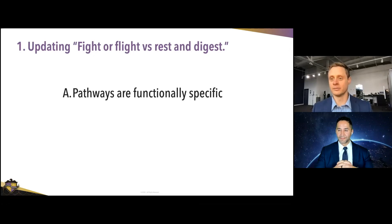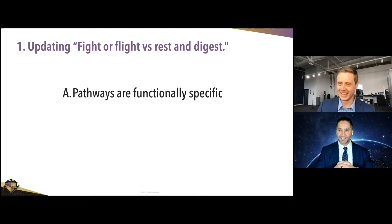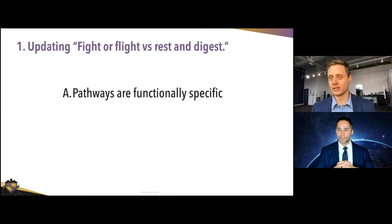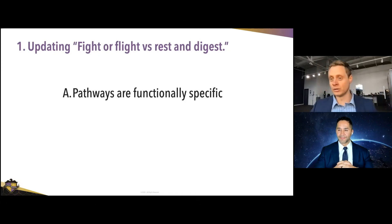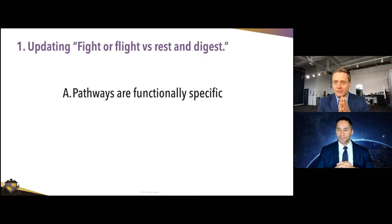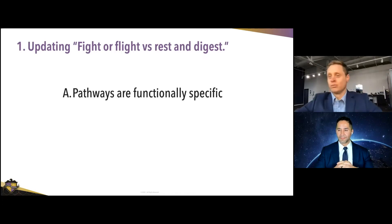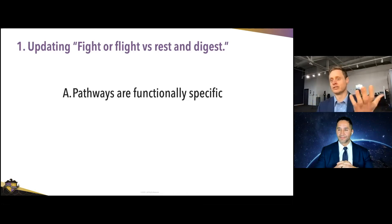Very frequently you'll hear people describe their sympathetic system as being in overdrive, or their fight-or-flight being in overdrive. The same thing applies: blood pressure, for example, is mostly modulated through muscle sympathetic nerve activity. That allows us to take the peripheral vascular system going through the muscles and send sympathetic fibers to all of them. It's functionally specific — it constricts the blood vessel — and because it's a big organ system it goes everywhere, creating increases in blood pressure.